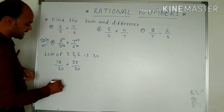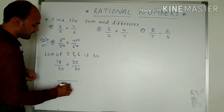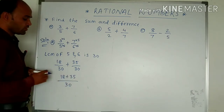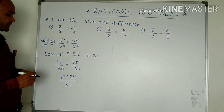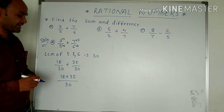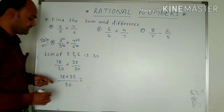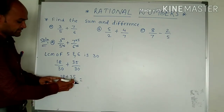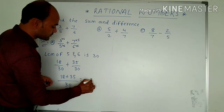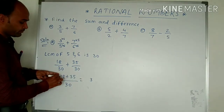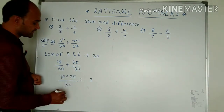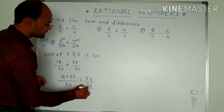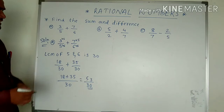So 30 will be the common denominator, and we have 18 plus 35. We have to add 18 plus 35: 8 plus 5 becomes 13, carry 1. 1 plus 1 is 2, 2 plus 3 is 5. We get 53 divided by 30 as the answer.